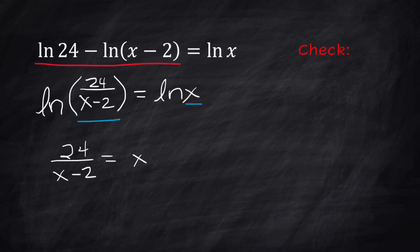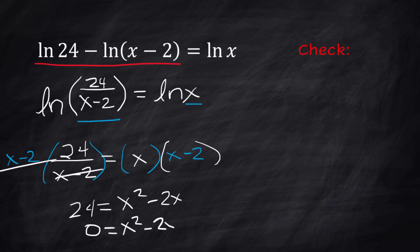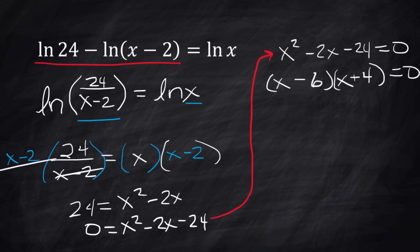Multiply both sides by x minus 2 so that we can clear that fraction. That's going to cancel. And you now have 24 equals, and I'm going to go ahead and multiply this out. That's going to be x squared minus 2x. Subtract 24 from both sides. We're going to get 0 equals x squared minus 2x minus 24. Factoring. So our two answers, if you solved here, are x equals 6 and x equals negative 4.